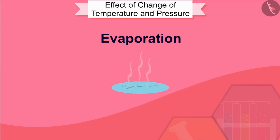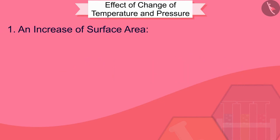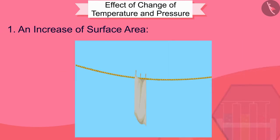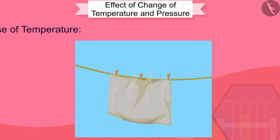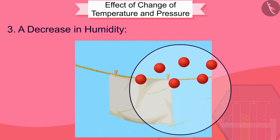Let us see what are the factors affecting evaporation. The rate of evaporation increases with the following factors. First, an increase in surface area: evaporation is a surface phenomenon, so if the surface area is increased, the rate of evaporation increases — for example, while putting clothes out to dry, we spread them out. Second, an increase in temperature: with the increase of temperature, more particles get enough kinetic energy to go into the vapour state.